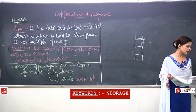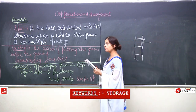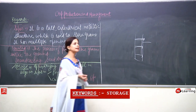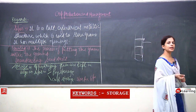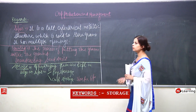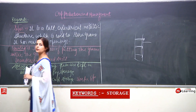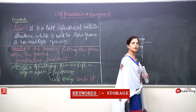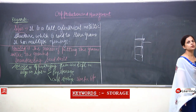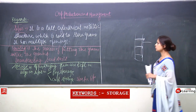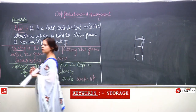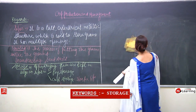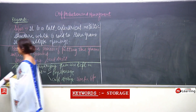Now moving to threshing and winnowing. In NCERT, threshing and winnowing are explained as one process — to remove grains from the chaff. However, in different books, there is a difference between the two. Threshing is to remove the grains from the harvested stock of hay, while winnowing means to remove the grains from the chaff.